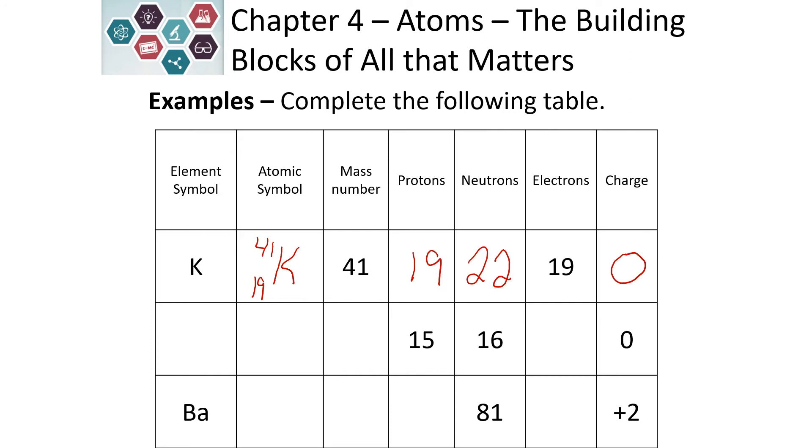We've got 15 protons in our second example. Our charge is 0. That tells us that we have 15 electrons. To find our mass number, we take protons plus neutrons to get a total of 31. If we have 15 protons, we can look at the periodic table and determine that this is phosphorus, which has an elemental symbol of P. To write the atomic symbol, we write 31 on top for our mass number and 15 on the bottom for our atomic number.